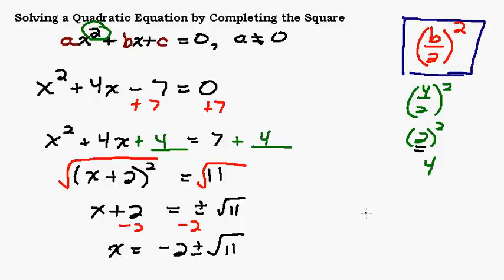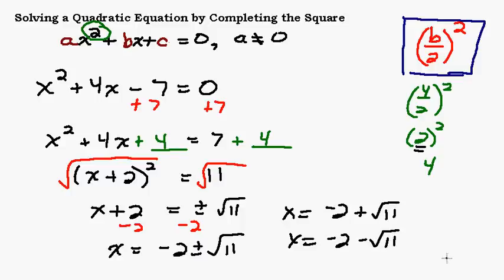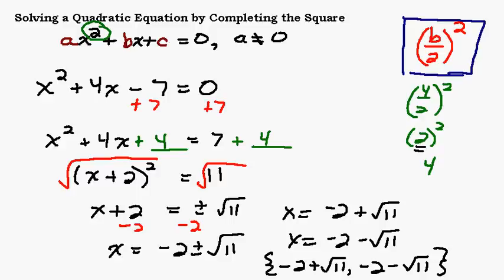And you can leave it just like that. If it doesn't ask for a decimal approximation and asks for the two answers separately, then you can separate them out: negative 2 plus square root of 11 and negative 2 minus square root of 11. Sometimes you'll be asked to write it in set notation. Just depending on how your instructor likes it written out or how your book writes it out. Not very often will you need to find the decimals unless you're using this to find the x-intercepts of a parabola or something like that. If you need the decimals, just use your calculator and punch it in.